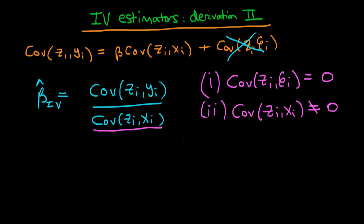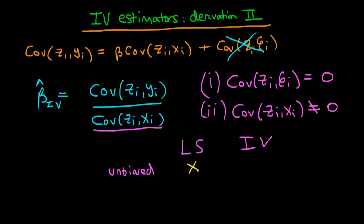A valid question you might ask is how does our IV estimator compare with that of the least squares estimator? We're going to first look at whether they are both unbiased or both biased. The least squares estimator in the case where we have endogenous errors we've already stated is biased — it's not unbiased. But you might think that maybe we've gotten around the bias issue in the least squares estimator by using this instrumental variable. Well, unfortunately, it turns out that instrumental variables is similarly biased.